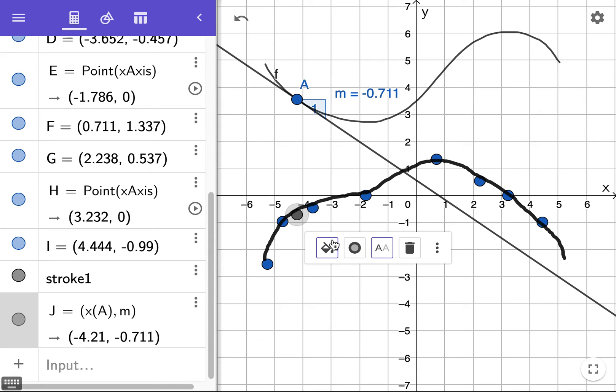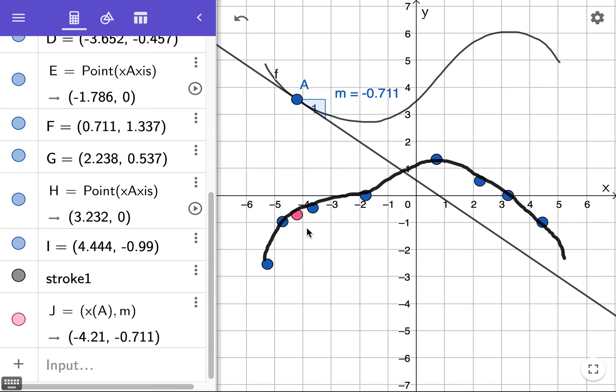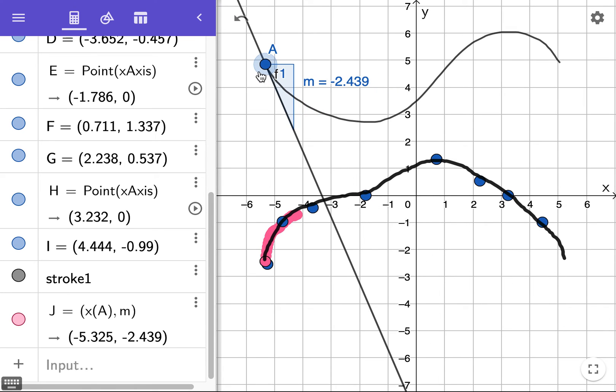So I'm going to click on that point, change the color, make it red, let's make it pink. Make it really stand out. Now, let's right click on it and show the trace. That's the key. Now watch this. You show the trace of that point. You could actually sketch a derivative. Look, that's cool. And now if we slowly drag it along,